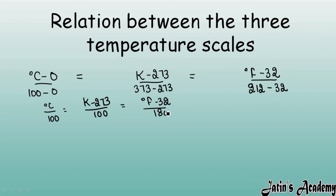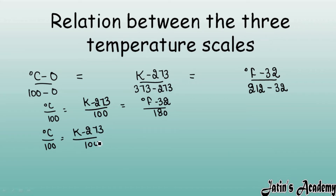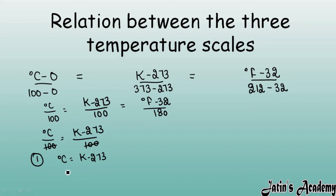Now do the comparison. First, comparing degree Celsius and Kelvin: the 100 in the denominator cancels on both sides, giving us degree Celsius equals K minus 273. This is the first relation between degree Celsius and Kelvin, and we will use this relation to solve numericals.